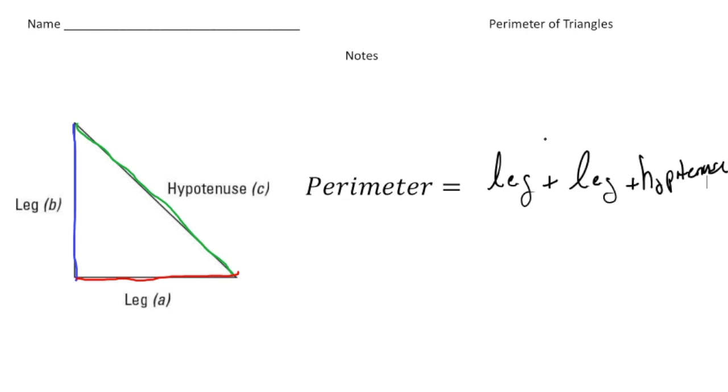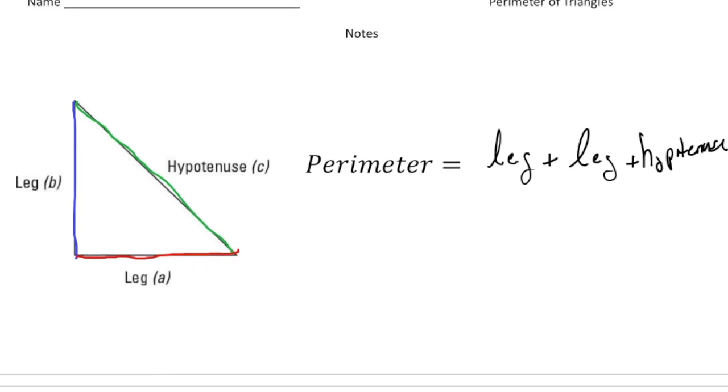All right, so the challenge is if you don't know what hypotenuse is or one of the legs, you have to use the Pythagorean theorem to figure that out. So let's do one of those problems. Let's turn the page.